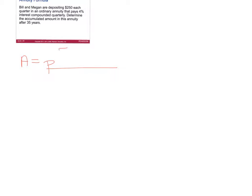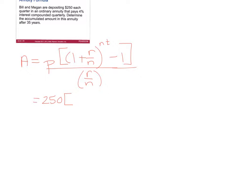Let's write down our annuity formula: A equals P times the quantity 1 plus R over N raised to N times T minus 1, all over R divided by N. In this problem, the payment they are making is $250, the interest rate is 4%, it is compounded quarterly so that's four times a year, and they are going to do this for 35 years.